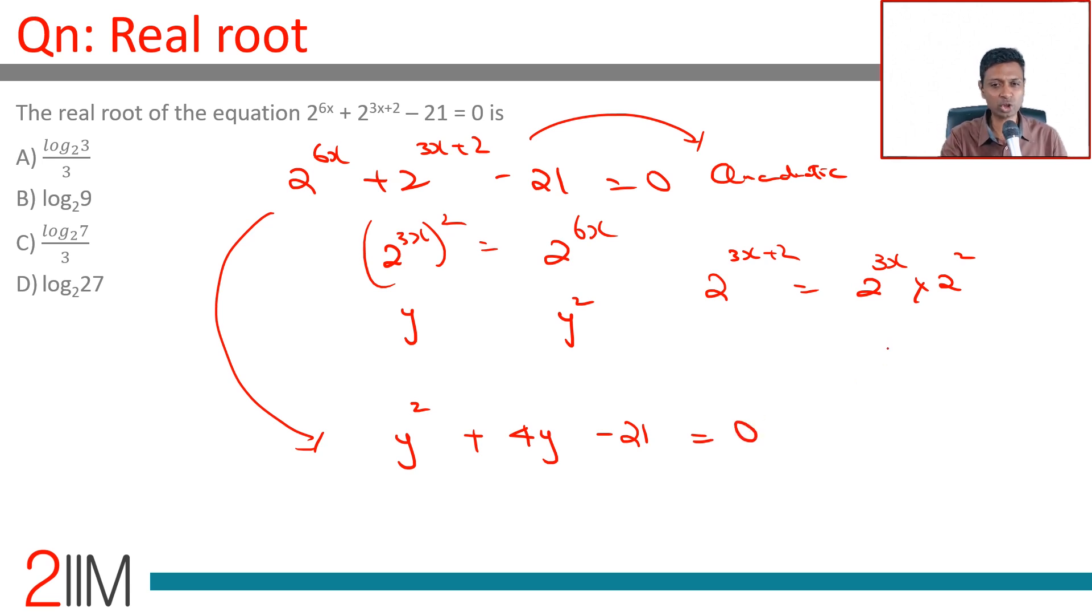Once you crack this, we are pretty much through. 2^(3x+2) is 2^(3x) × 2². 2² is 4, so this is y² + 4y - 21 = 0.